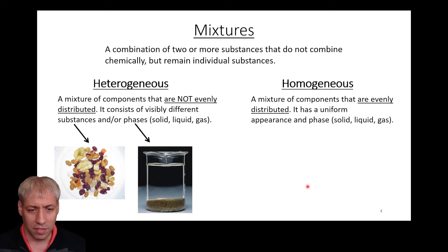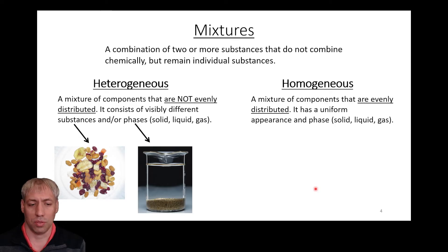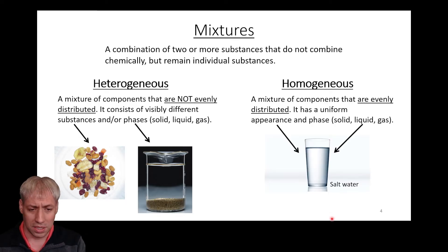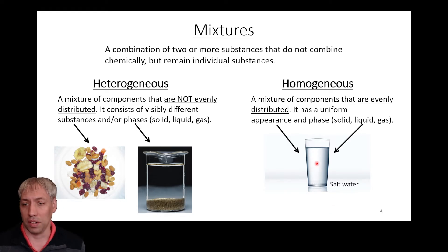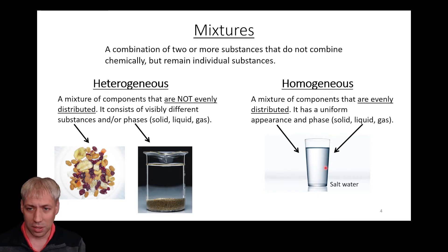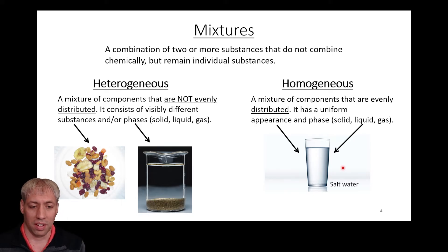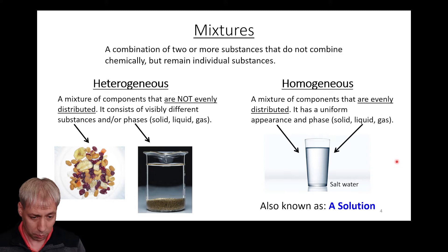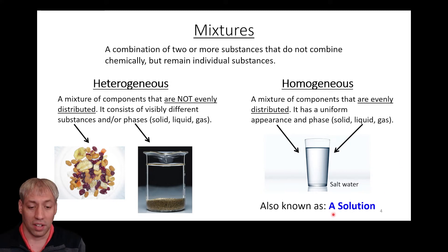In contrast, homogeneous mixtures are where the components are evenly distributed — they give a uniform appearance. By all intents and purposes, you can't see that they're mixed together. Salt water is an example: it's visually very hard to distinguish from pure water. Maybe there's a little refractive index change, but for the most part it looks like a single thing because the multiple components are mixed together uniformly. These homogeneous mixtures are known in chemistry as a solution.